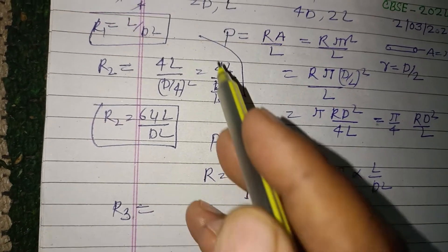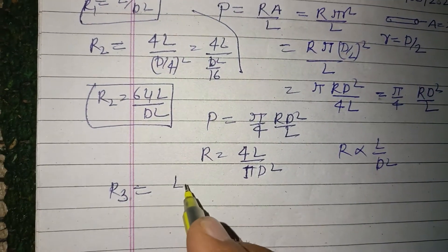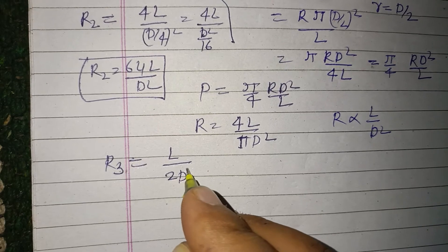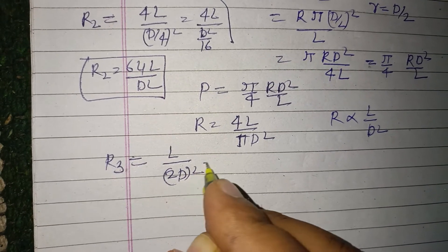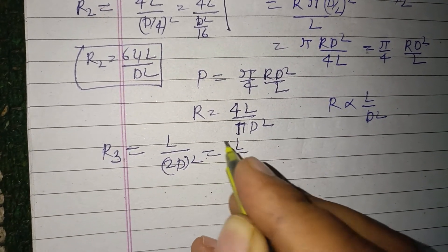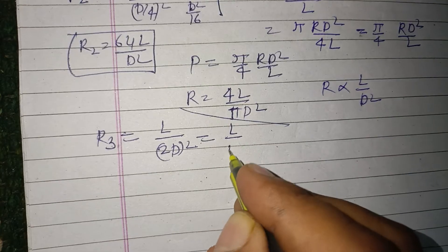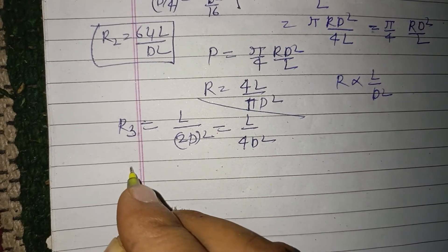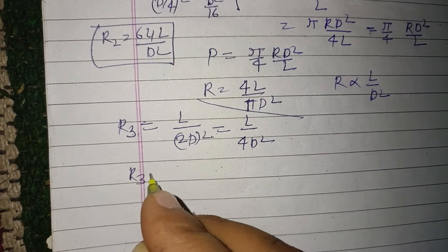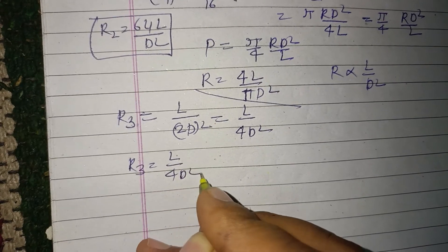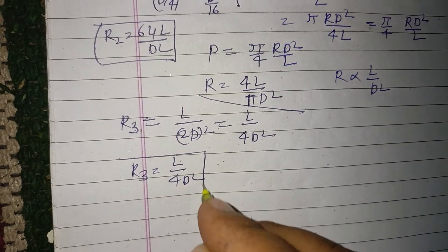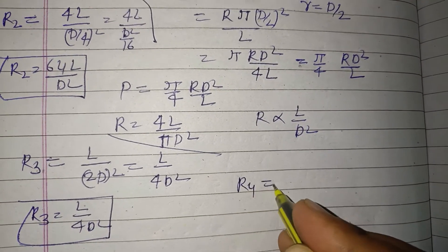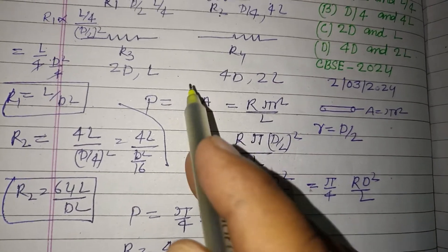For Wire 3: R3 ∝ L/D², where L = L and D = 2D. So R3 ∝ L / (2D)² = L / (4D²), giving R3 ∝ L/(4D²).